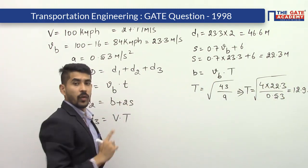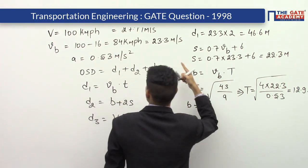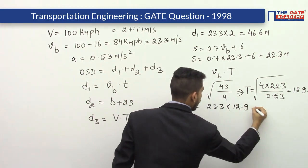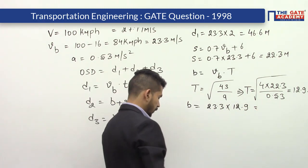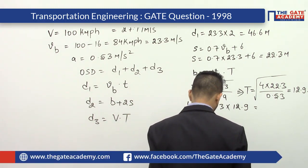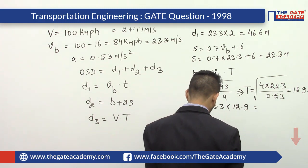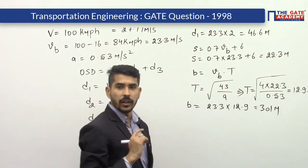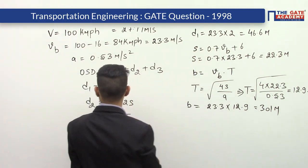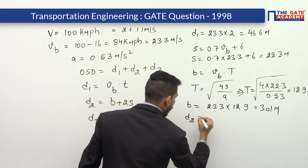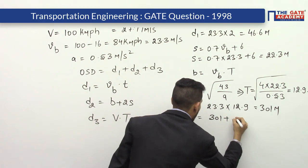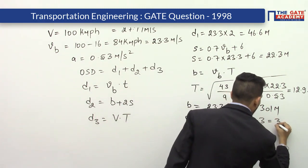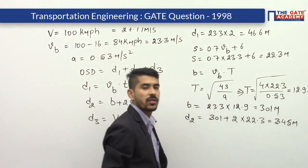Now b equals vb into T, so b equals 23.3 into 12.9, which comes out to be 301 meters. With b and s known, d2 equals b plus 2s equals 301 plus 2 into 22.3, which gives d2 approximately equal to 345 meters.